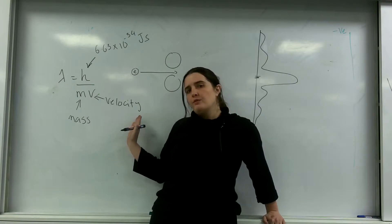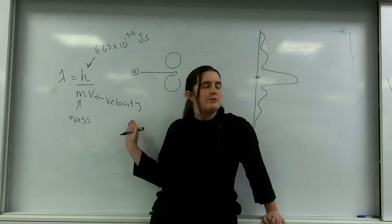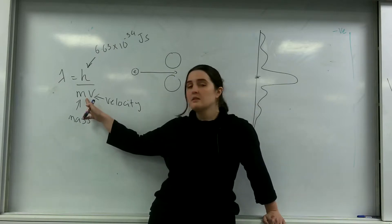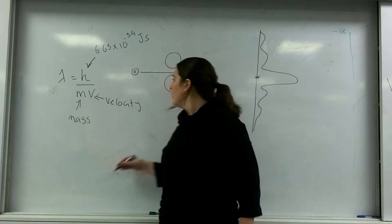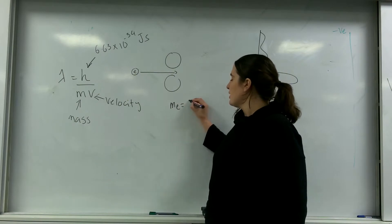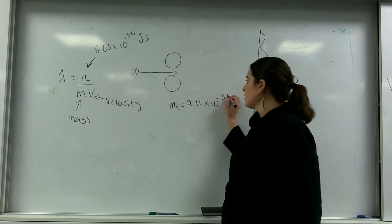The only reason that electrons were able to be noticed was because their mass is low. So the mass of an electron is 9.11 times 10 to the minus 31.